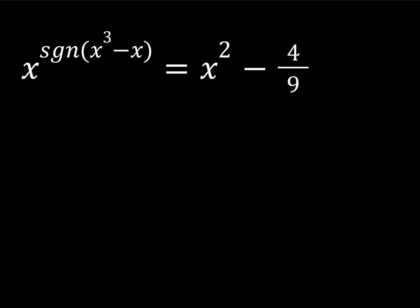Hello everyone. In this video we're going to be solving a very interesting equation — we're doing this for the first time. It is the signum function, also known as the sign function, but not the trigonometric sine function. So we have x to the power signum of x cubed minus x equals x squared minus 4 over 9, and we're going to be looking for real values of x.